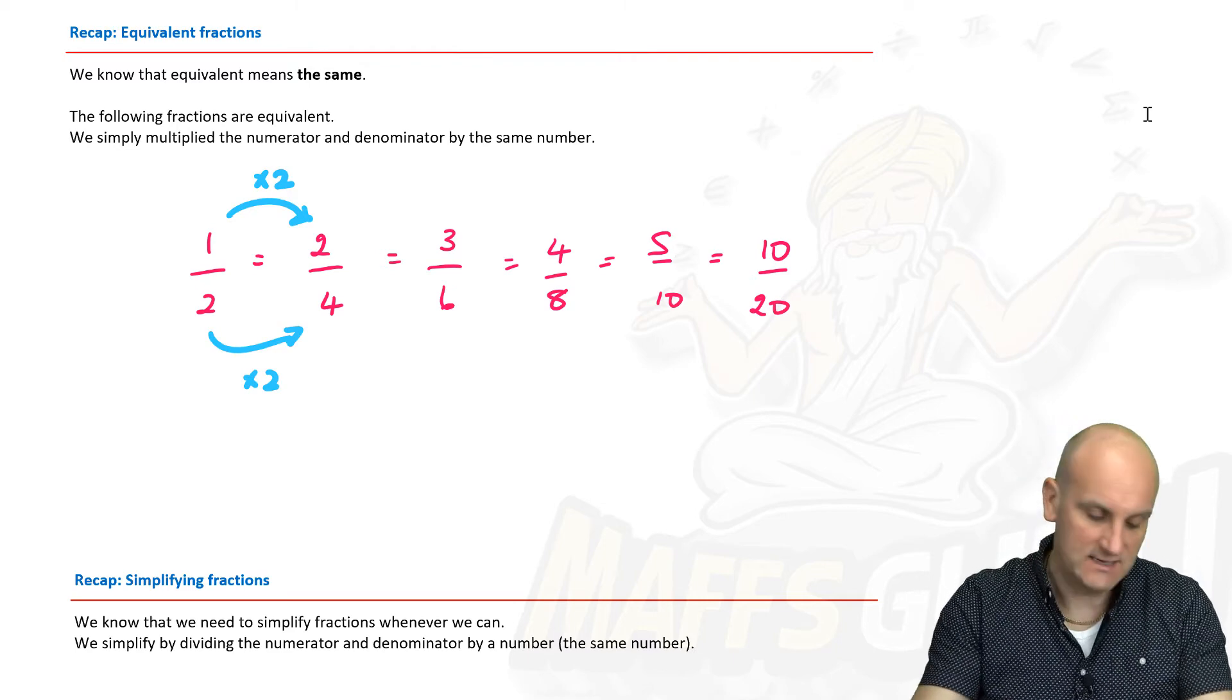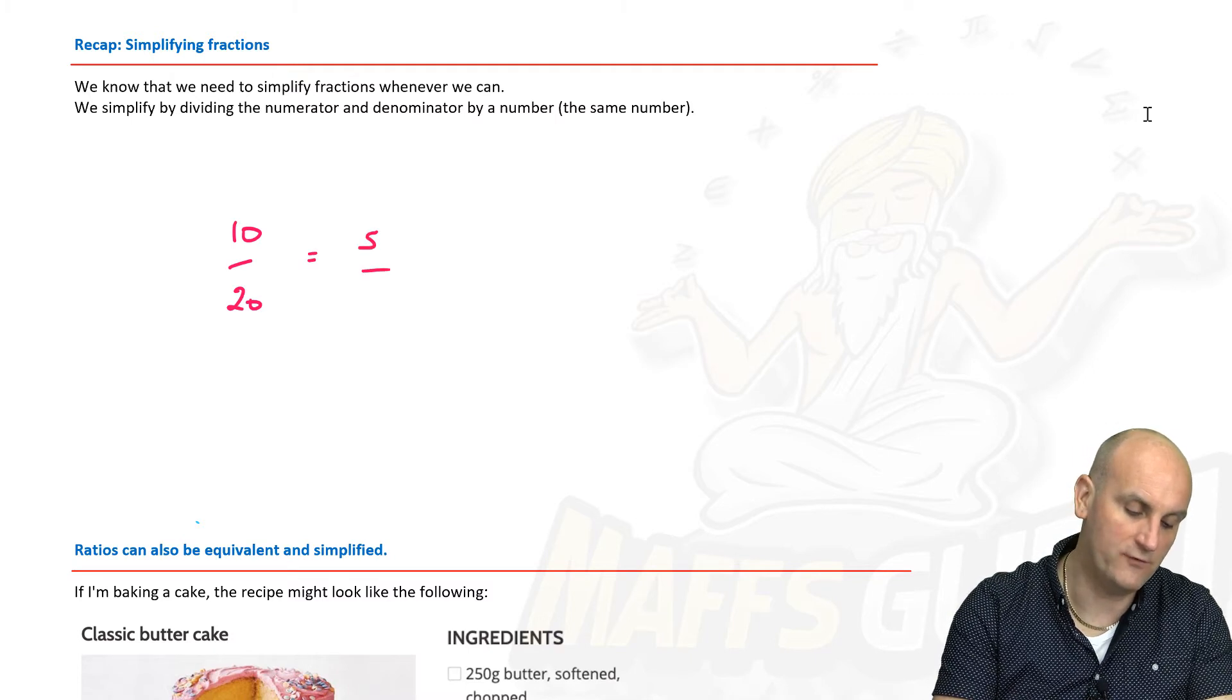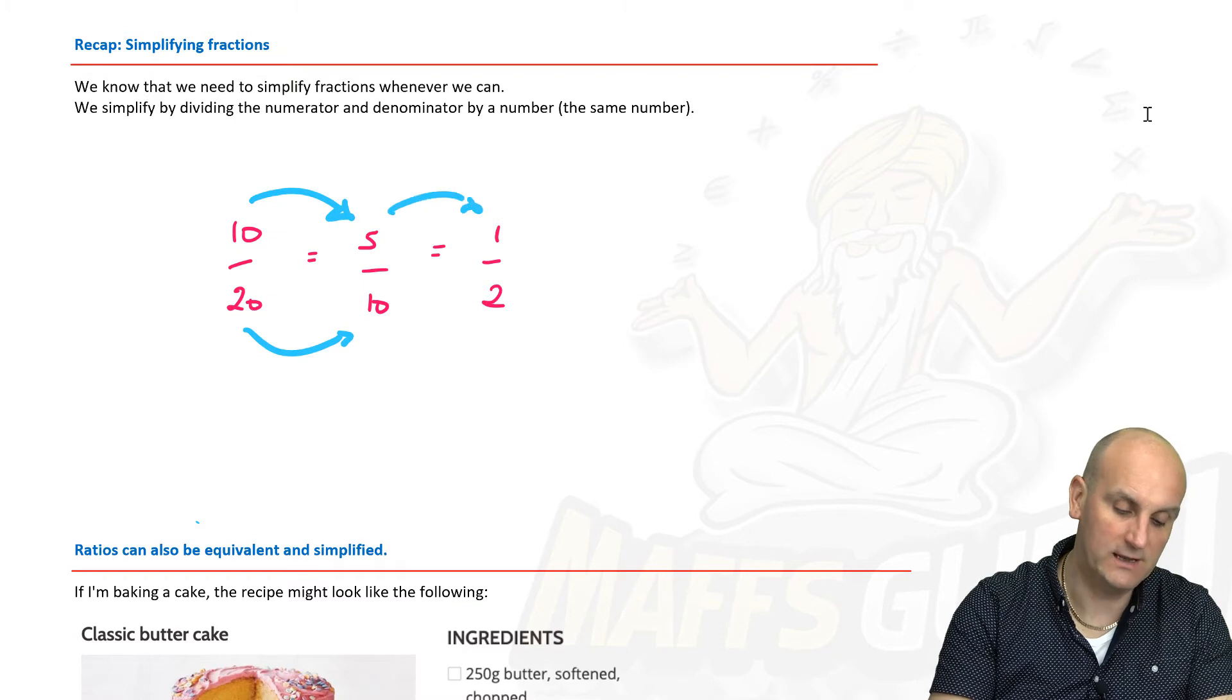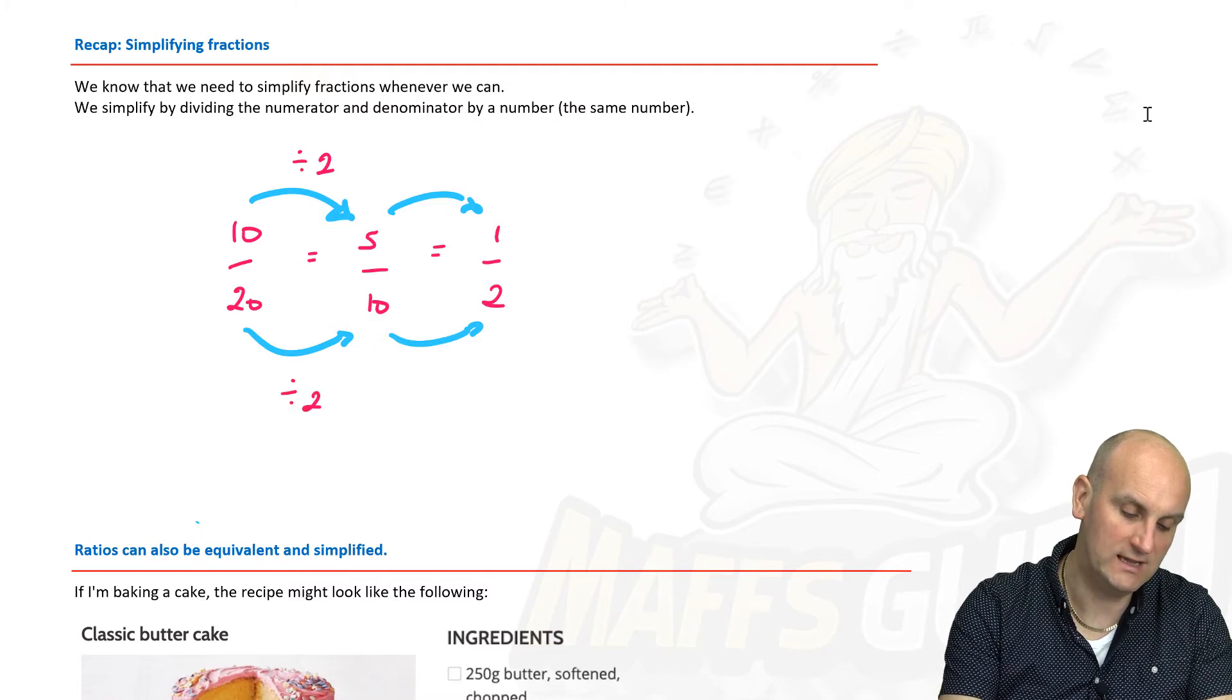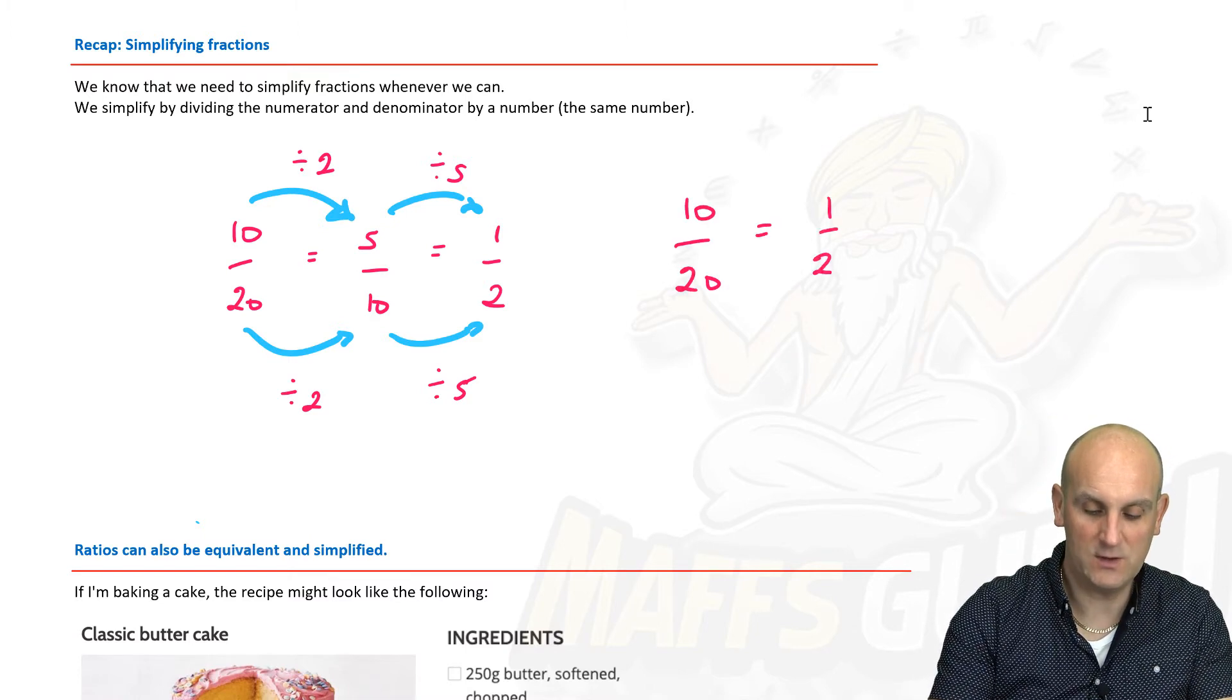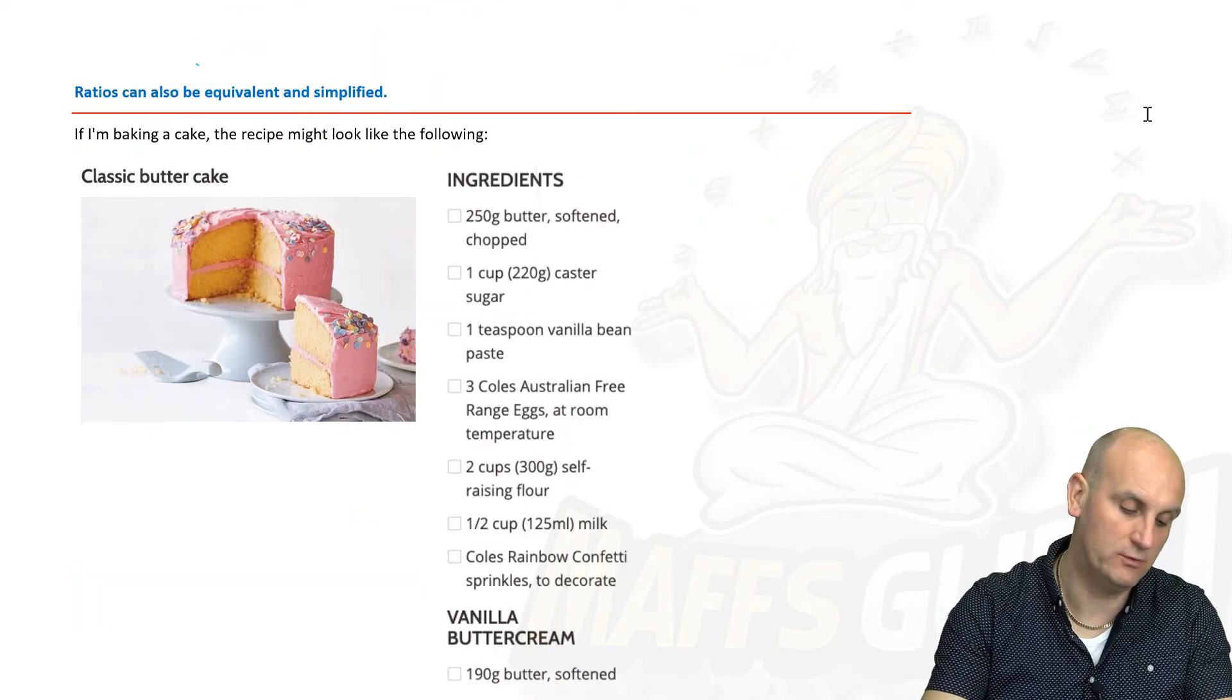Later on we're going to come back to the idea that you can actually cancel down ratios as well. Why? Of course you can, they're fractions. Same same, simplifying fractions. Again, let's go the other way around. Ten on twenty is the same as five on ten, which is the same as one on two. So cancelling down again is really important, or simplifying depending on which country you're in and what we call it. So there I divided by two and I divided by two here. I divided by five and divided by five as well. I could have gone straight from ten on twenty to a half by dividing both top and bottom by ten.